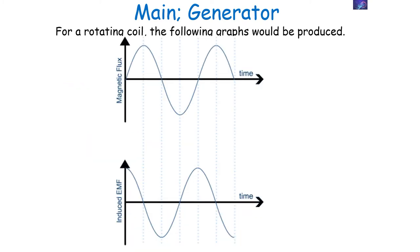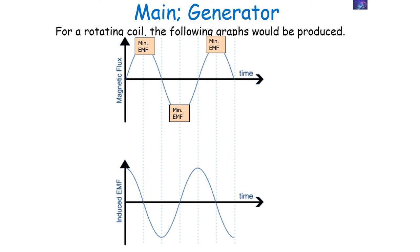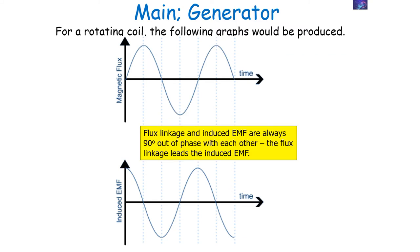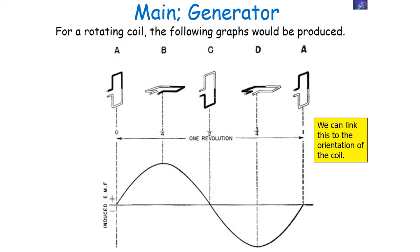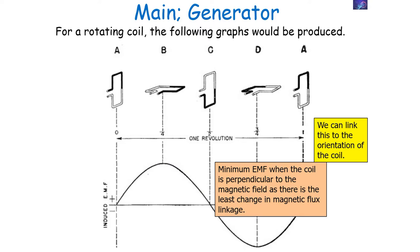For a rotating coil in a magnetic field, you get maximum induced EMF when the magnetic flux linkage is very small, because the change per second is largest, and minimum induced EMF when the magnetic flux linkage is large, because the change is smallest. The flux linkage and the induced EMF are always 90 degrees out of phase with each other, with flux linkage leading. The maximum EMF is induced when the coil is parallel to the magnetic field, as the change in magnetic flux linkage is greatest; the minimum EMF occurs when the coil is perpendicular to the field.